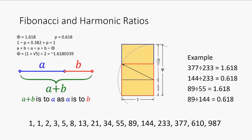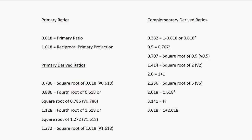The sequence of numbers can be interpreted such that every given number above 13 is an approximate multiple of 1.618 by dividing the larger number by the smaller, and 0.618 by dividing the smaller number into the next number in the sequence. There are a number of ratios which can be derived from 0.618 and its reciprocal 1.618. The primary ratios are 0.618 and 1.618, then the primary derived ratios: 0.786, 0.886, 1.182 and 1.272, and the complementaries: 0.382, 0.707, 1.414, 2.236, etc. They all have a relationship back to 0.618 and 1.618.